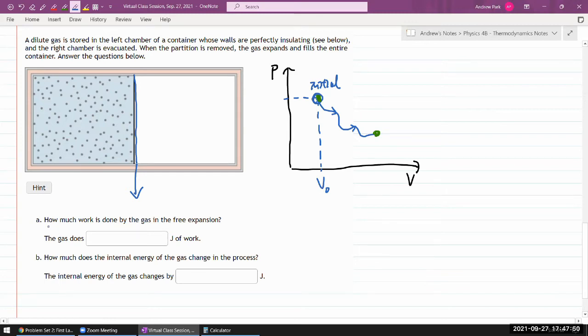Part A asks how much work is done by the gas in the free expansion. And it's almost in the word free expansion - no work is done. If you are looking at this picture that I've been drawing, you should have been visualizing this area under the curve. So isn't this how much work is done in the expansion?